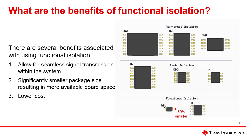There are several benefits to functional isolators. Functional isolators allow for seamless signal transmission, maintaining signal integrity without the consequences of ground loop interference. Functional isolators also have a very small package size — the image to the right shows the different packages per type of isolation. The RAU package for functional isolators uses 80% less board area, allowing users to implement functional isolators in tighter PCB designs. Functional isolators are also lower cost than isolators with basic or reinforced isolation.